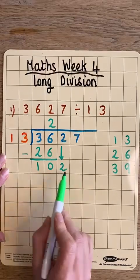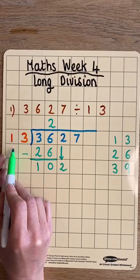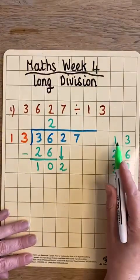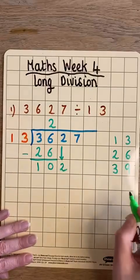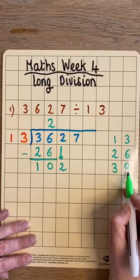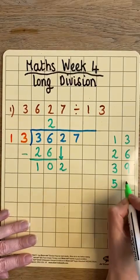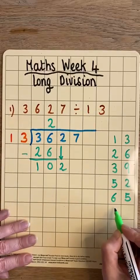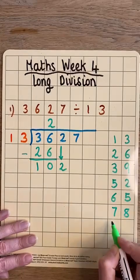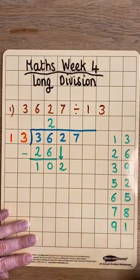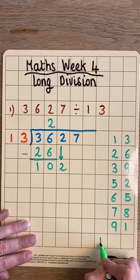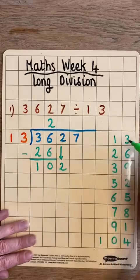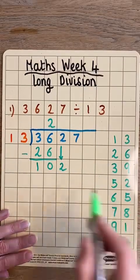So now we say 102 divided by 13 — how many 13s can I fit into 102? I'll keep going with the 13 times table: 3 thirteens are 39, 4 thirteens are 52, 5 thirteens are 65, 6 thirteens are 78, 7 thirteens are 91, and 8 thirteens would be 104. That's too many, so I can only fit 7 thirteens into 102.